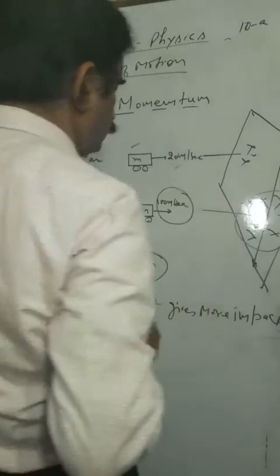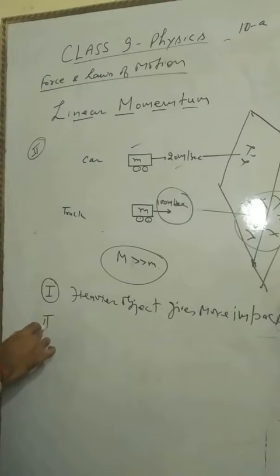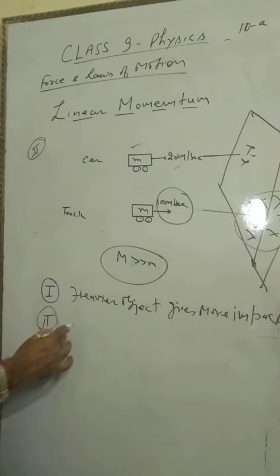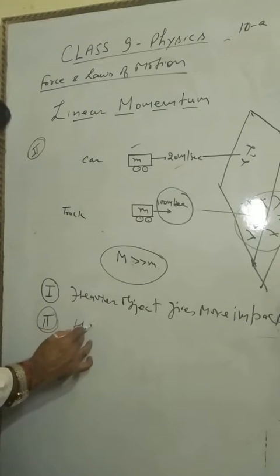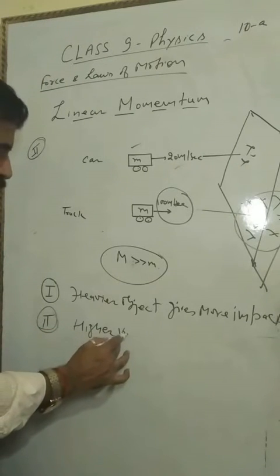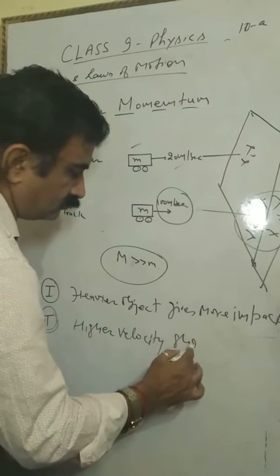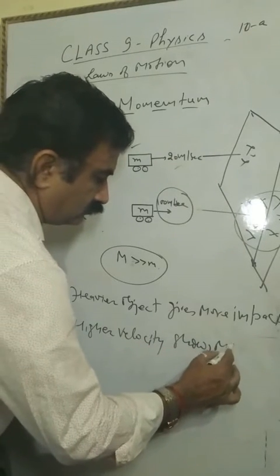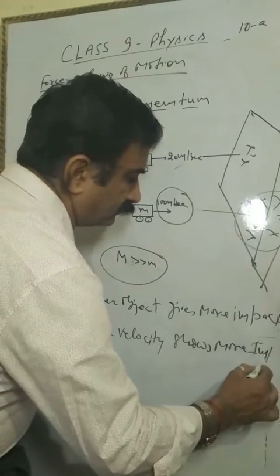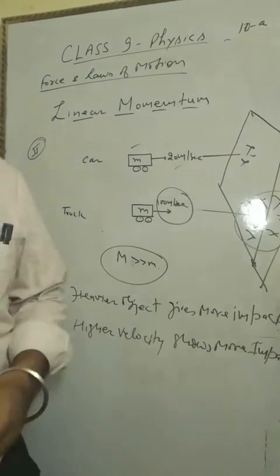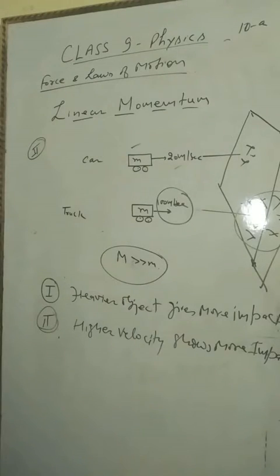So second conclusion came here: object which is having higher velocity shows more impact. So the conclusion you can see here.